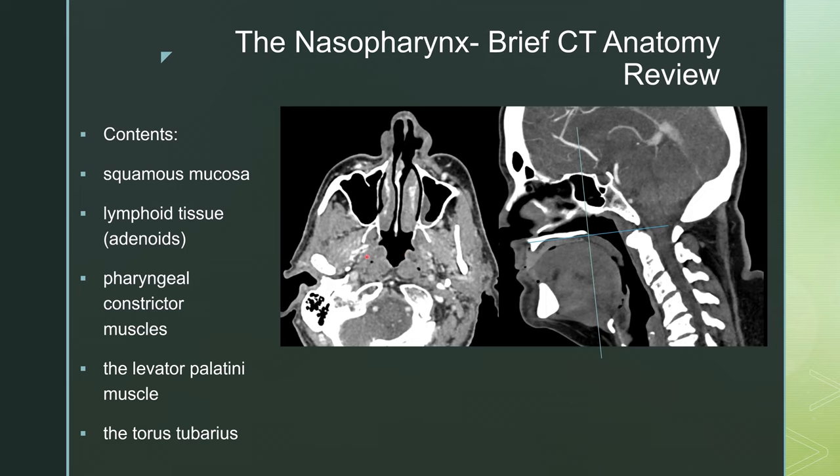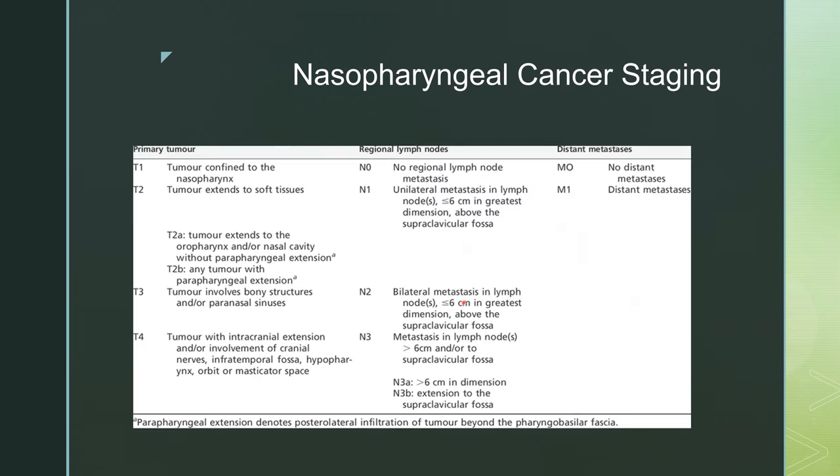On CT, you can see the torus tubarius right here. Behind it is the fossa of Rosenmuller, which is lined by that squamous epithelium.